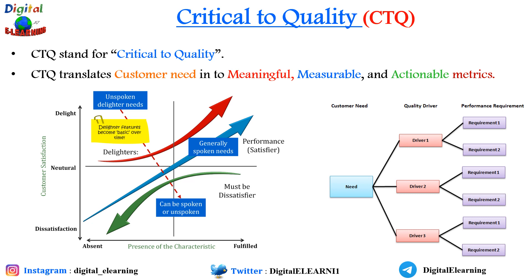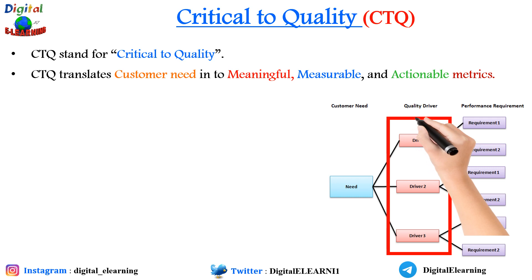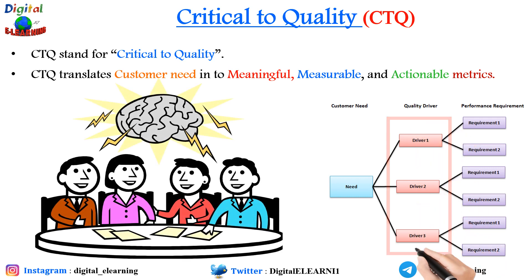Next is to look at the quality drivers. Once customer needs are identified, identify the quality drivers — these are the critical factors. It could be fast delivery, quality of food, competitive pricing, or anything else. The most common tool used here is brainstorming. These are the factors that must be present for the customer to think you are delivering a high quality product. Think from the customer's perspective, not the internal perspective.